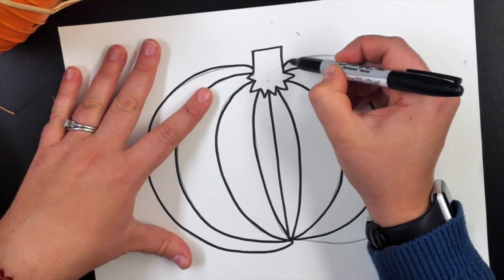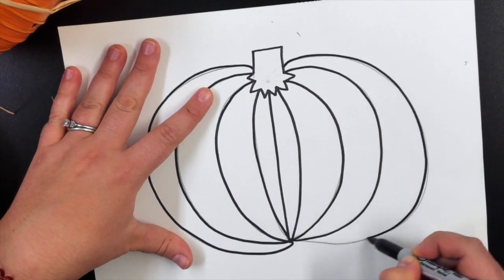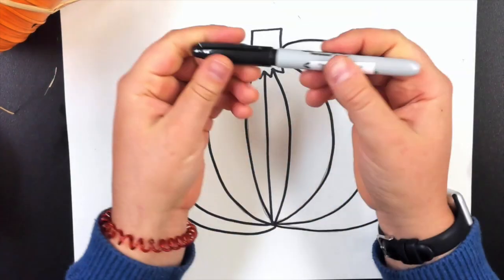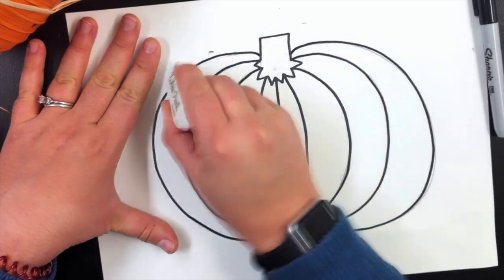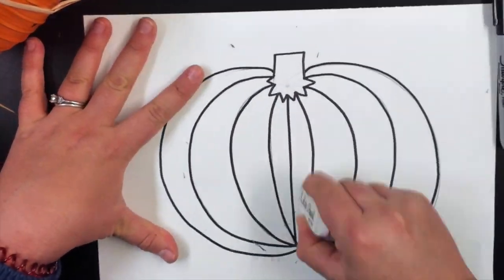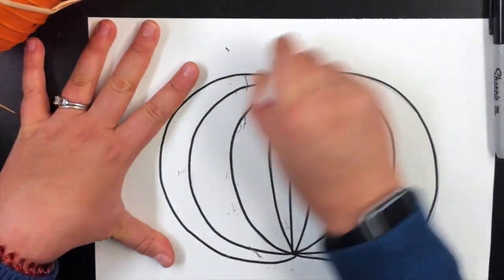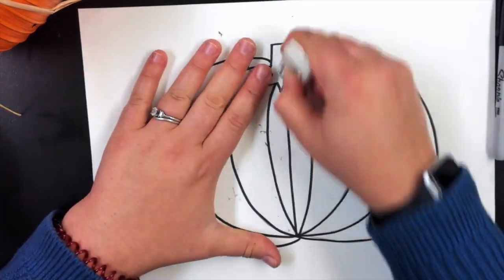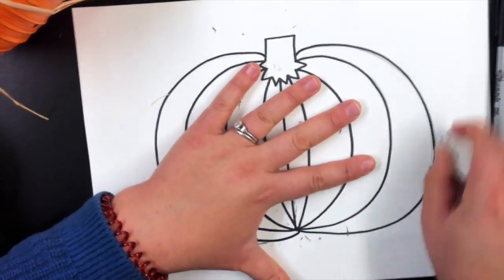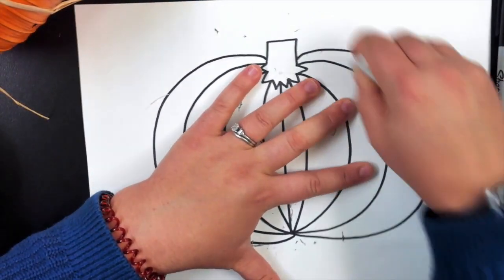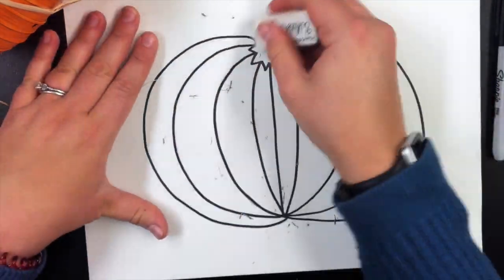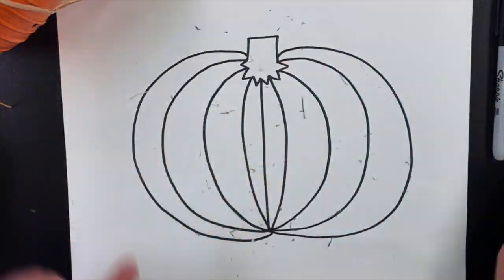When you are all done with the Sharpie, make sure you put the cap on nice and tight. The next step is a secret step because a lot of people don't notice it, but it makes a big difference. We are going to go and erase the whole pumpkin, so that means we'll just be erasing the pencil lines, but not the Sharpie lines.